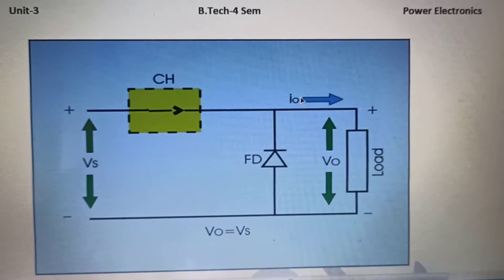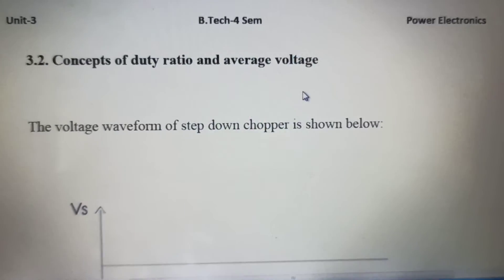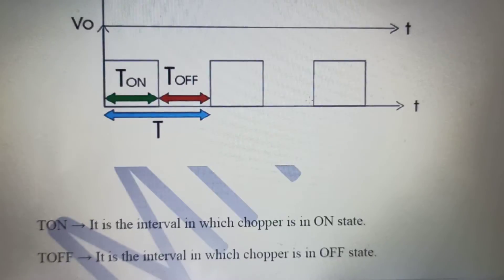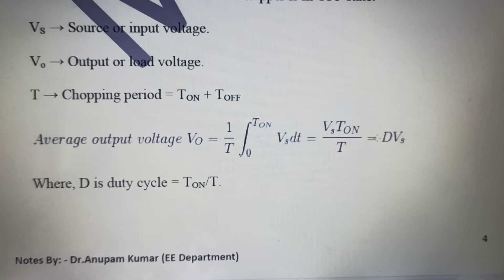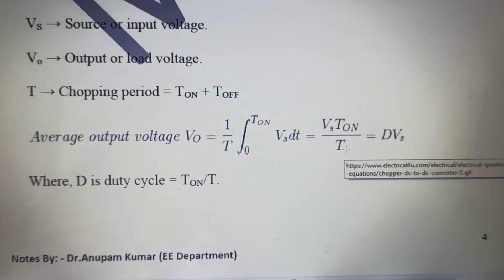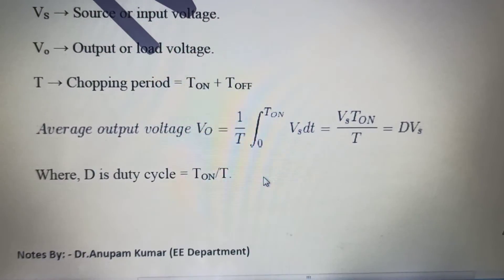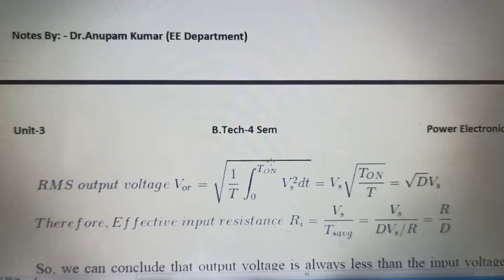I will show you to get V naught equals to D*Vs. Meaning the output voltage, this ratio that I am going to show you right now. We have shown V naught equals to D*Vs, where D is specified here, that is T_on by T.